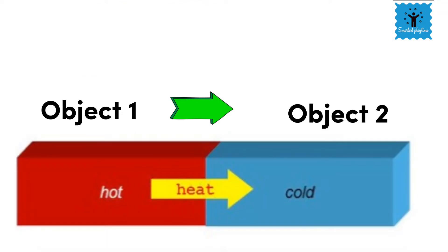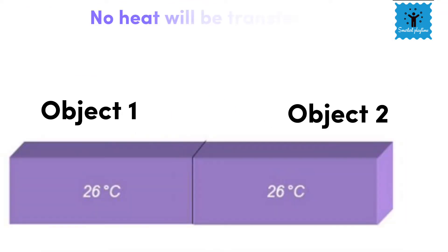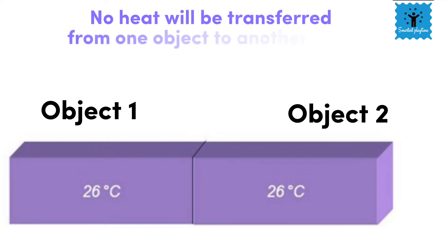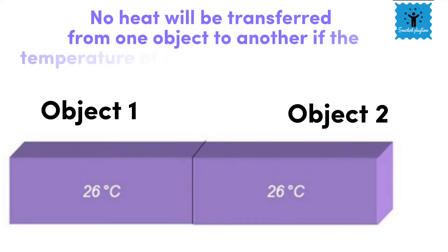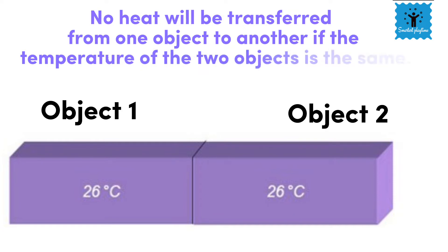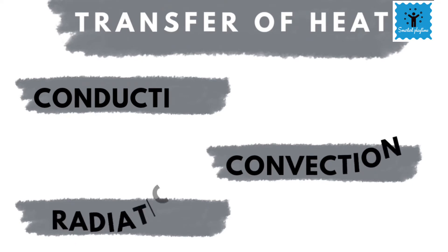When two objects attain the same temperature, the flow of heat stops. This means there is no flow of heat if the two objects are at the same temperature. There are three ways through which heat can be transferred: conduction, convection, and radiation.